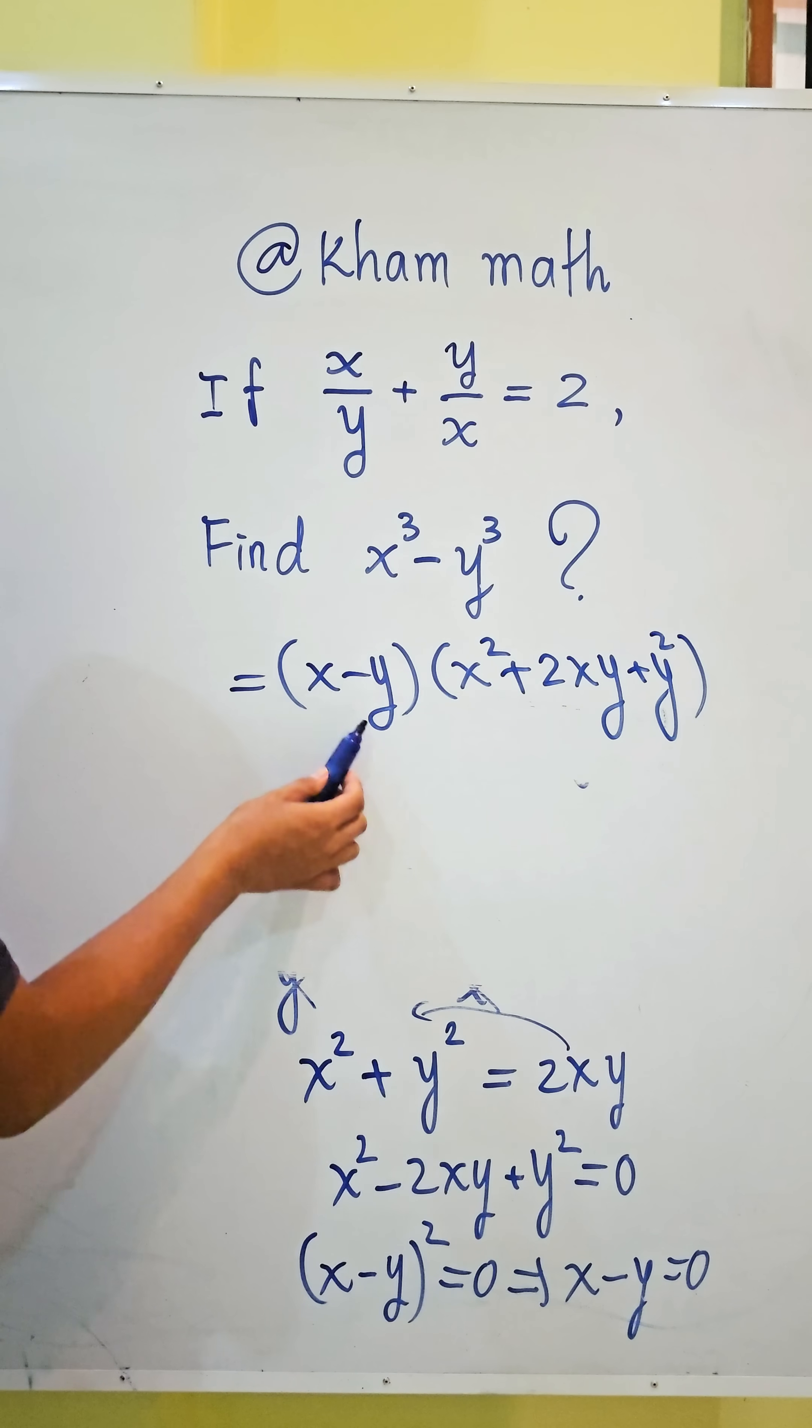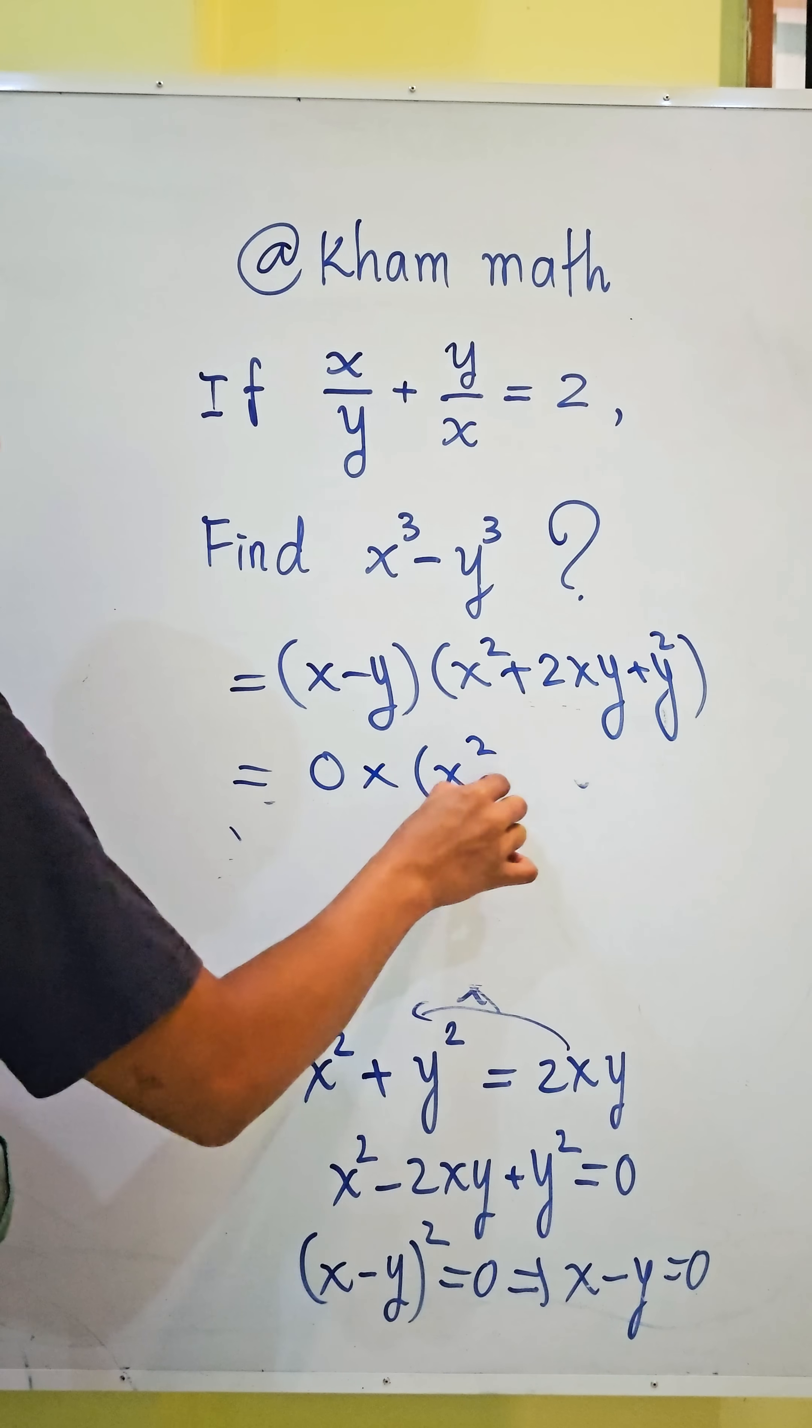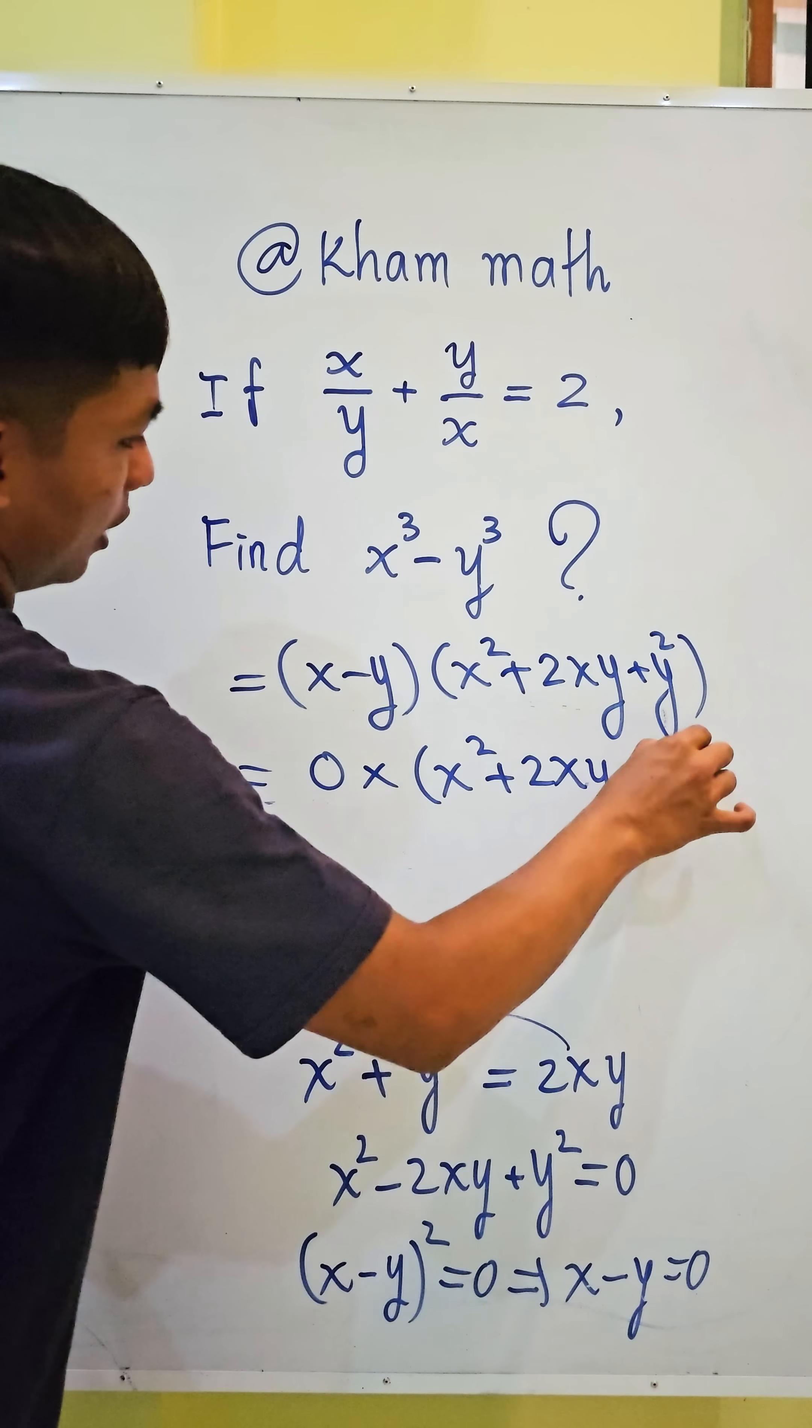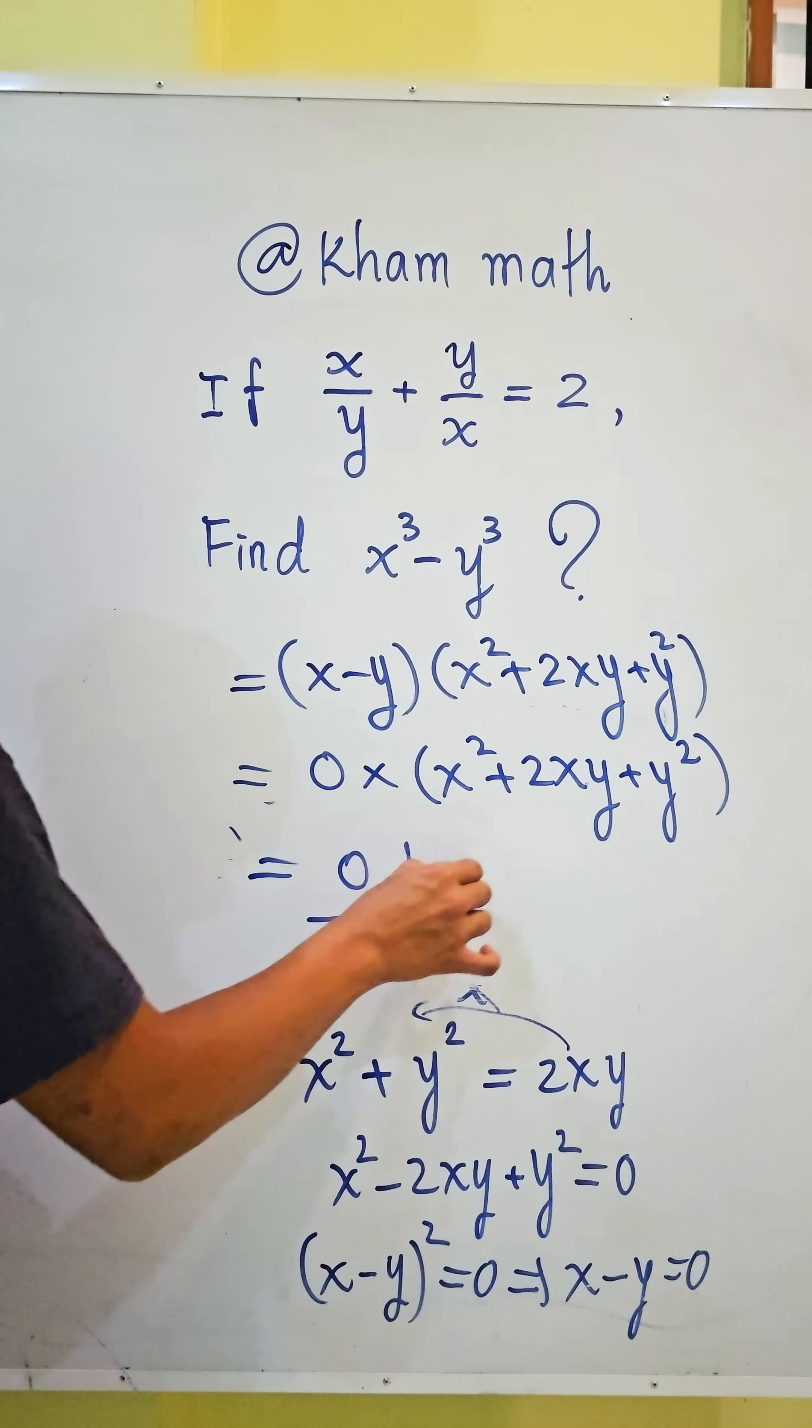We replace x - y with zero, so we get zero times (x² + 2xy + y²), which equals zero. This is our answer.